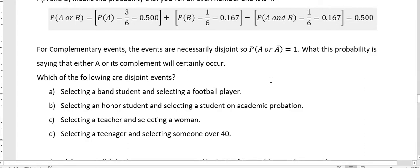Which of the following would be considered disjoint events? Selecting a band student and selecting a football player. Selecting an honors student and selecting a student on academic probation. Selecting a teacher and selecting a woman. Selecting a teenager and selecting someone over 40. Remember, disjoint events are events that cannot happen simultaneously.